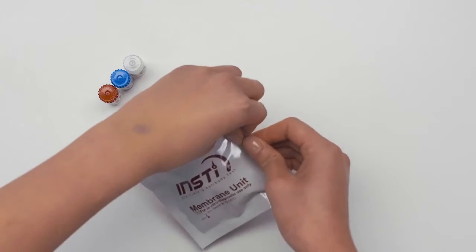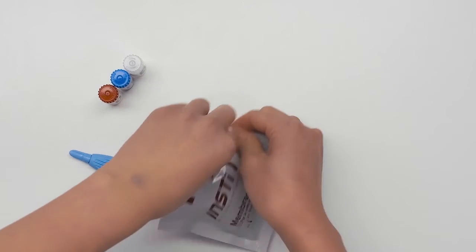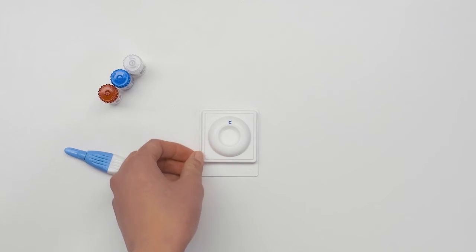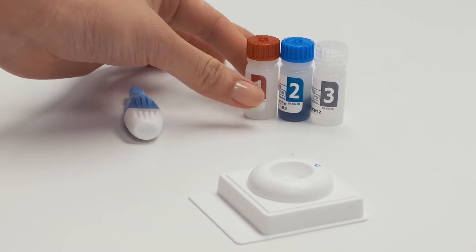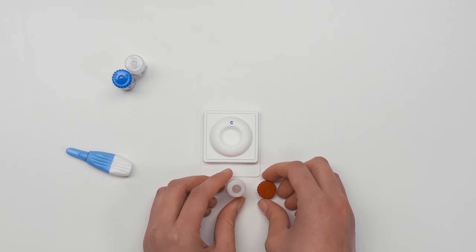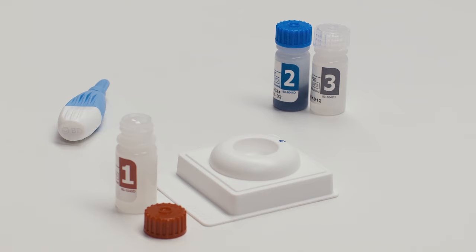When you are ready to start, open the test device pouch. Place the test device on a flat surface in a well-lit area. Remove the cap from bottle 1 and place the bottle on a flat surface with care. Place the cap nearby to recap the bottle after you add the blood.